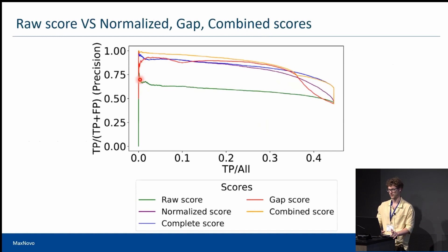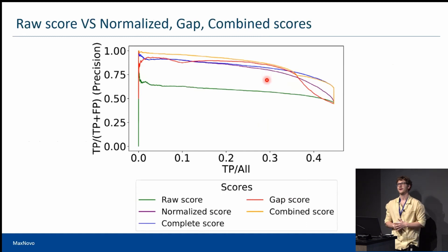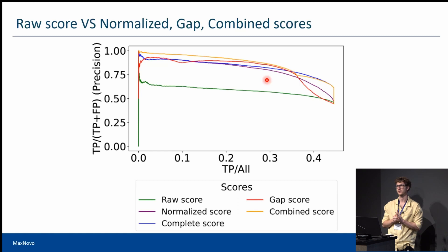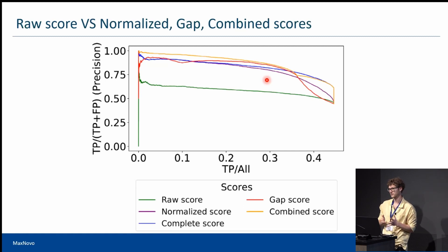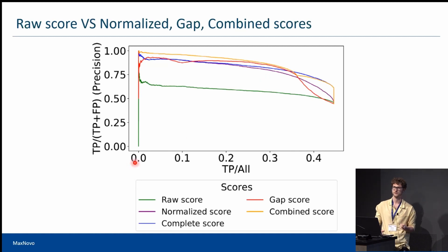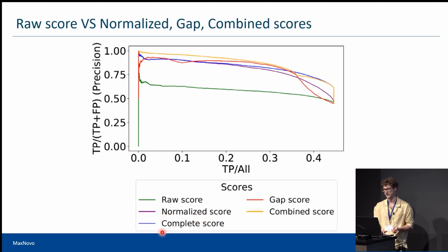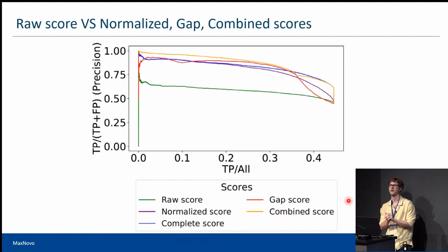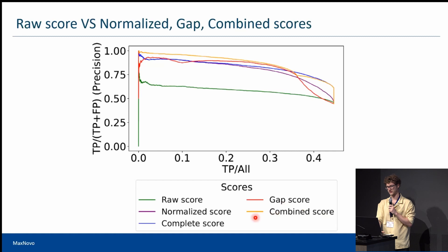First, we plotted the raw score on this plot and the performance wasn't ideal. Using analogies to library search, the final peptide list is not based only on Andromeda score — we calculate posterior error probability and do FDR. Using only the raw score in de novo would be analogous to library search without FDR. That's why we developed a set of normalized scores: normalized score is the raw score divided by precursor mass; complete score is the normalized score filtered for complete sequences; and gap score describes how far the best identification is from the second. The combined score is the ranking sum of gap score and complete score.